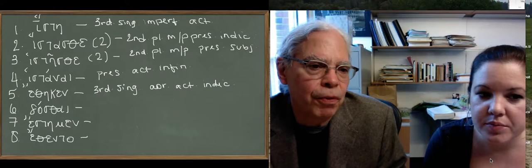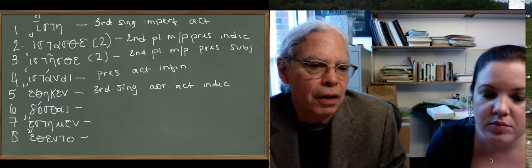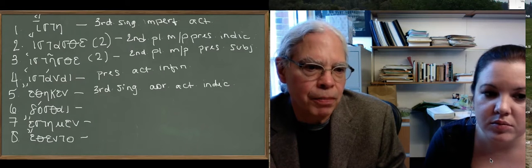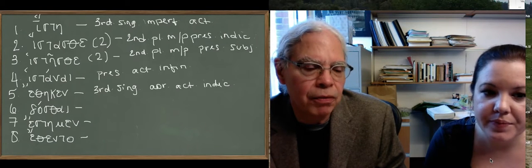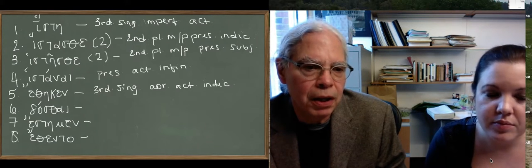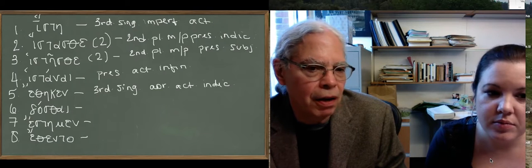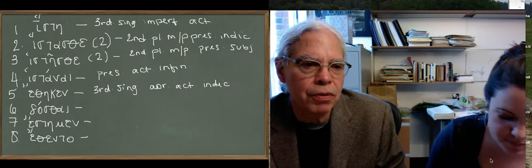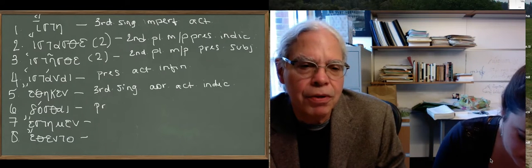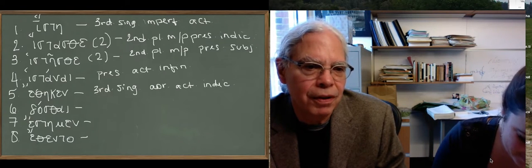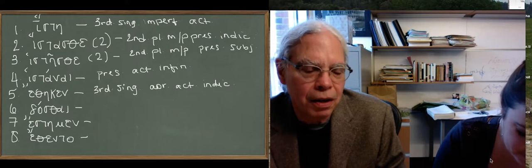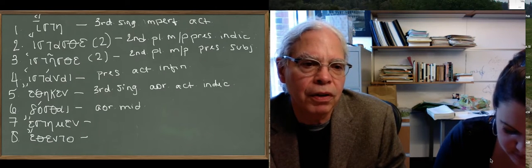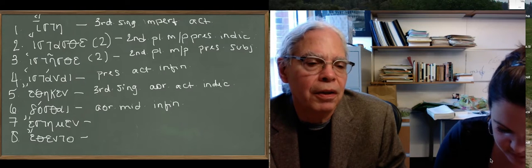The next form is dosti. What have we got there? An un-reduplicated aspect stem, da, from the verb to give, so it's an aorist form. And then we have sti, we recognize that. That's the middle infinitive ending. So this is aorist, middle, because the middle and the passive are different in the aorist. Aorist, middle, infinitive. Dosti.